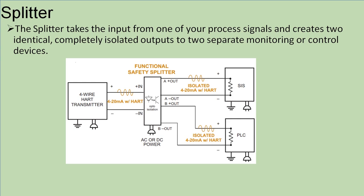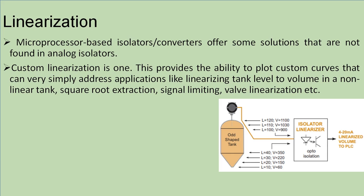For linearization, microprocessor-based isolators or converters offer linearization features which are not found in analog isolators. Custom linearization is done using the signal isolator. Suppose you consider a non-linear tank as shown in this figure, which measures the level and converts this level to volume. Before sending this signal to the PLC, the signal isolator linearizes this non-linear volume to a linear signal and then transfers it to the PLC.